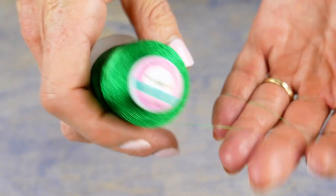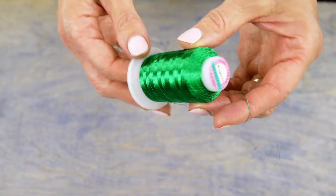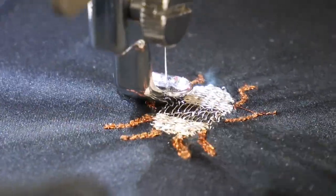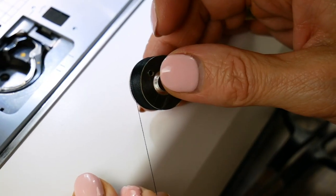Since the rayon core in Spotlight doesn't stretch, that is less likely to happen, so you will have trouble-free embroidery stitches and a soft finish to your design. We will be pairing the Spotlight with our 80-weight DecoBob in the bobbin.